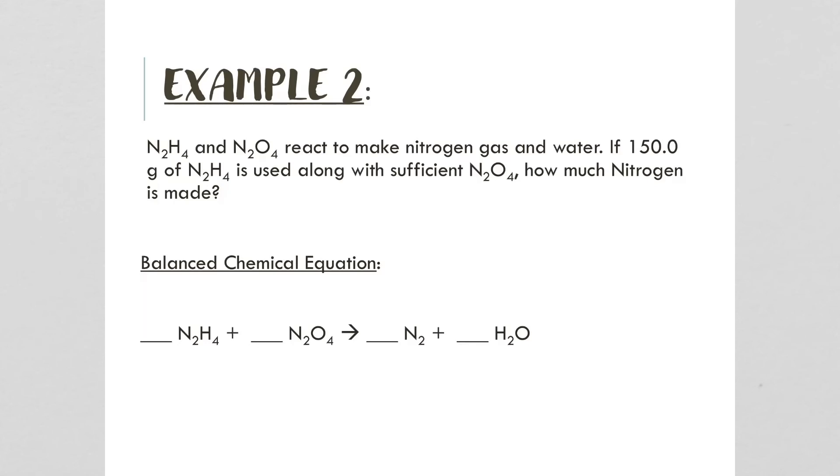The first thing we'll need to do is balance this chemical equation. We can see that there's two nitrogens and two nitrogens, so there's four total on the left side, but only two on the right side. We have four hydrogens but only two, and then we have four oxygens but only one.